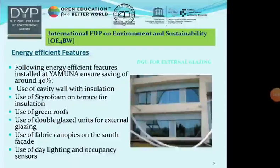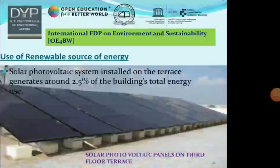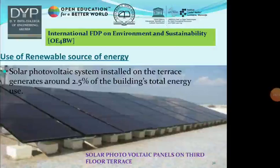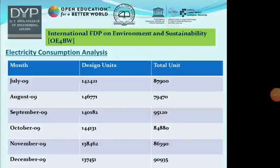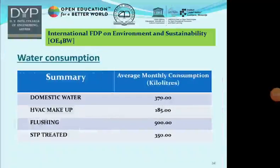Conservation of energy is also an important part. This is achieved by using a green roof, double glazed units, fabric canopies, daylighting, and occupancy sensors. For renewable energy, they installed solar photovoltaic systems on the terrace, which generate around 2.5 percent of the total energy the building uses. The electricity consumption analysis of Yamuna shows that total units consumed are much less than the design or desired units, verified over a study of six months.